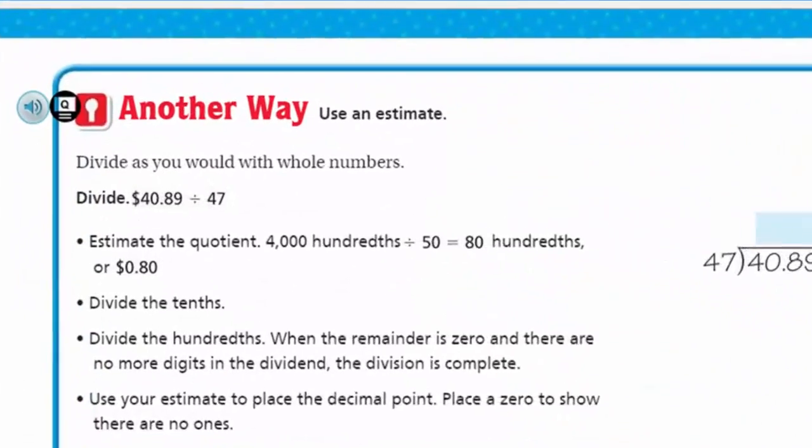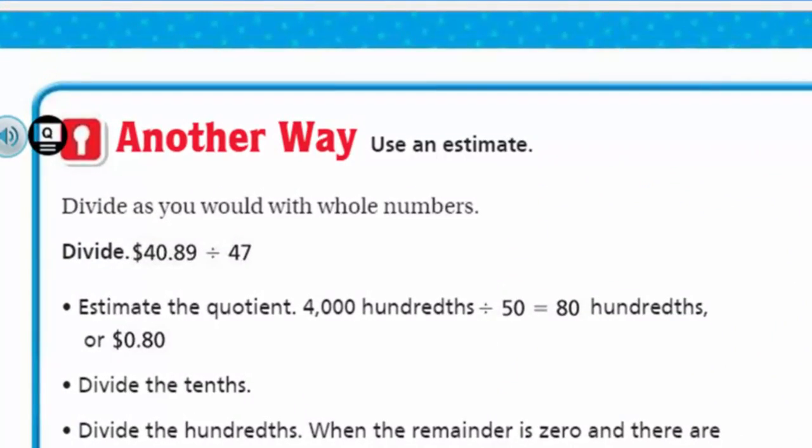Very cool. That's kind of a quick problem. Now let's go to the next page. It says we have another way. We can use an estimate. Divide as you would with whole numbers. Okay. Divide. Forty dollars and eighty nine cents divided by forty seven. So let's estimate the quotient. They say four thousand hundredths. They change the divisor from forty seven to fifty. And okay. And then we get eighty hundredths. Or eighty cents.